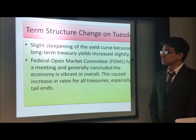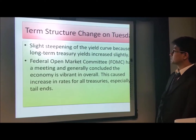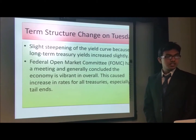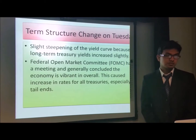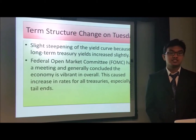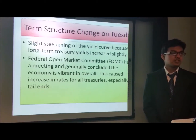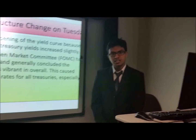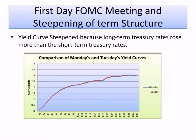On Tuesday, there was slight steepening of the yield curve because long-term Treasury yields increased more than the short-term yields. There was a meeting for the FOMC, Federal Open Market Committee, and its conclusion was that the economy is robust. This graph demonstrates that the higher spread for the long-term rates than the short-term rates caused the steepening of the term structure.